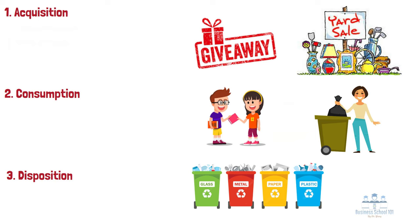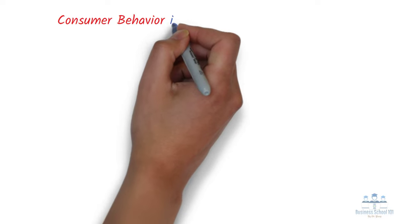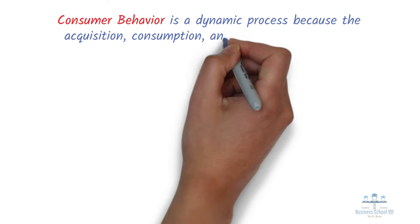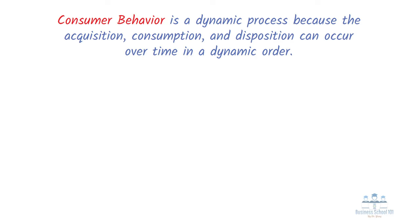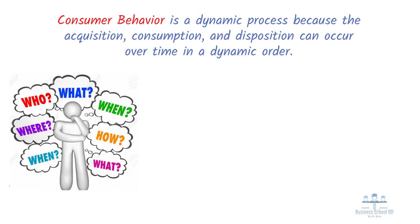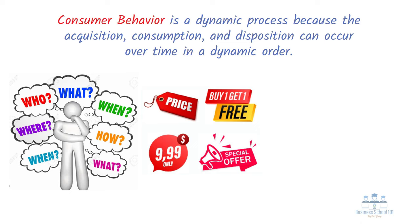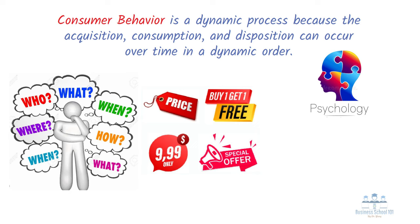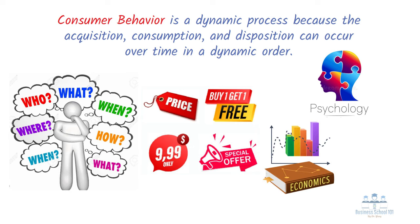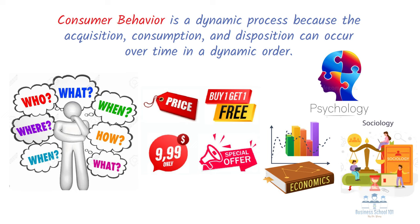Besides the above three categories, please also keep in mind that consumer behavior is a dynamic process because the acquisition, consumption, and disposition can occur over time in a dynamic order. It can involve many people in many decisions, such as where, when, and how to buy a product. Consumers are often influenced by marketing stimuli, and different domains of study can explain consumer behaviors from various perspectives. For example, psychology explains the internal process of consumers, such as motivation, perception, and memory. Psychology and economics together help to understand consumers' decision-making process. Sociology explains why and how consumers are interested in external factors such as culture and social influences.